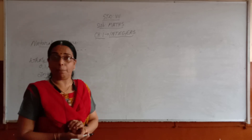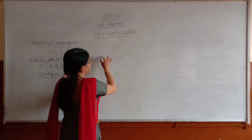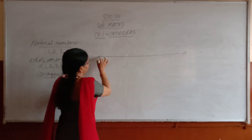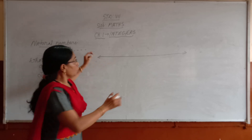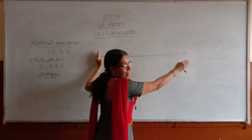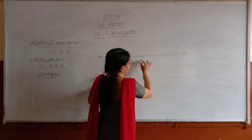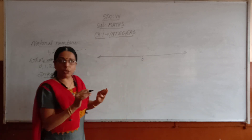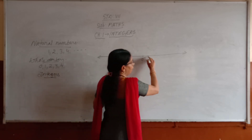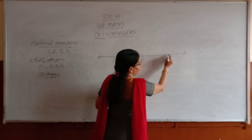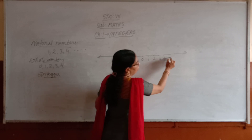These integers can be plotted on a number line. What is a number line? This is the number line — it extends to both sides. In this, the centre — mark it 0. From 0 towards the right, all numbers are positive. Mark equal distance of 1 unit: 1, 2, 3, 4, 5, 6.